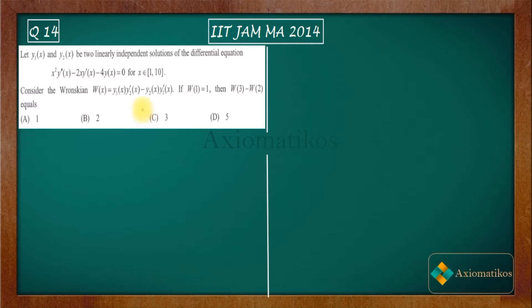have a look. Let y1 and y2(x) be two linearly independent solutions of the differential equation. We have y1 and y2, two linearly independent solutions of the differential equation. Now what differential equation do we have? We have a homogeneous differential equation of second order. It's given to us that x is in the closed interval [1, 10].